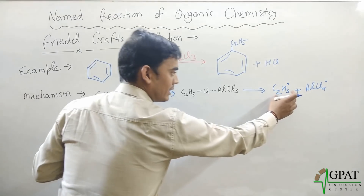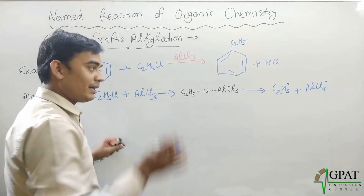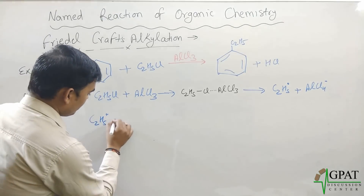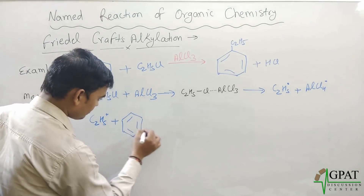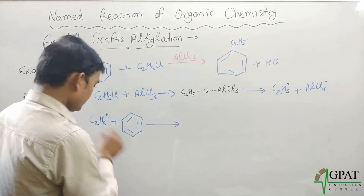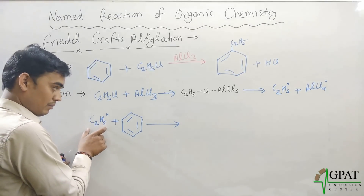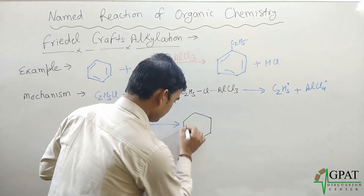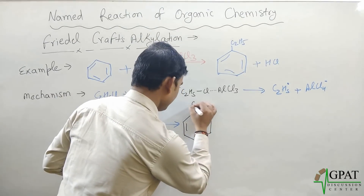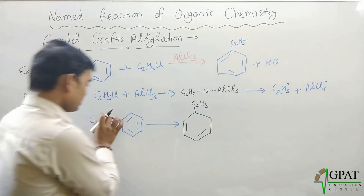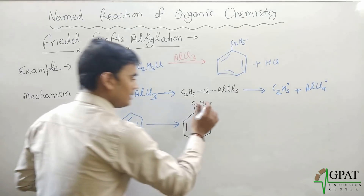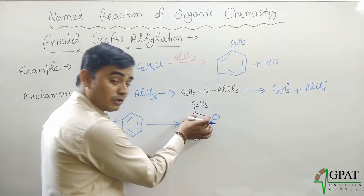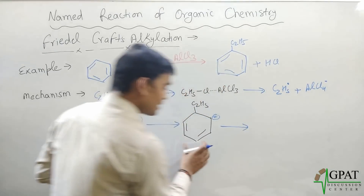A C₂H₅⁺ (ethyl carbocation) is produced, as well as AlCl₄⁻ (aluminium tetrachloride) carrying a negative charge. This ethyl carbocation then reacts with the benzene ring: C₂H₅⁺ attacks the benzene molecule, adds to the ring, and an intermediate product is formed.